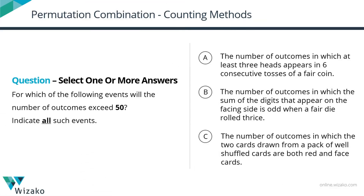The given question is a GRE quantitative reasoning sample question. This question is of the format: select one or more answers. It comes from the topic permutation and combination. Quickly read the question: for which of the following events will the number of outcomes exceed 50? Indicate all such events.